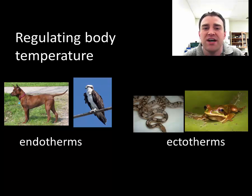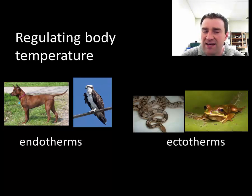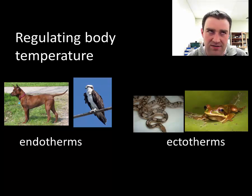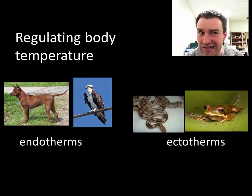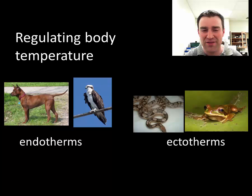To finish, let's discuss two different ways land animals regulate body temperature: endothermy and ectothermy. Endotherms are for the most part mammals and birds. Most reptiles and all amphibians are ectotherms, with some exceptions. It's a bit tougher to classify insects and some other groups, but those are the broad distinctions.